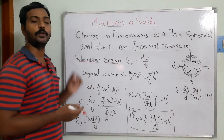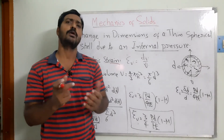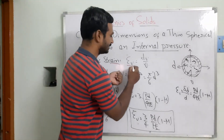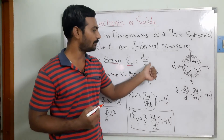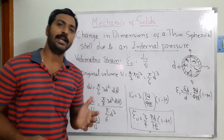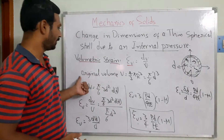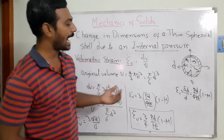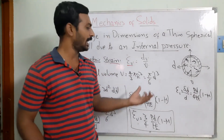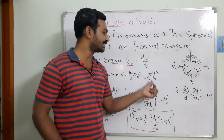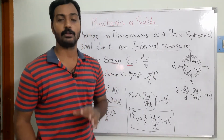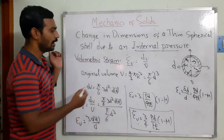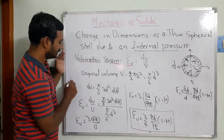The volumetric strain, epsilon_V, is defined as the change in volume divided by the original volume. The original volume of a sphere is (4/3)*pi*R^3. Substituting R = D/2 gives V = (pi/6)*D^3. We are now defining the volumetric strain in terms of diameter, so we proceed by differentiating this volume expression.